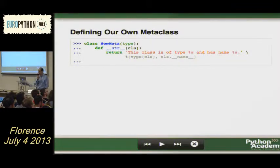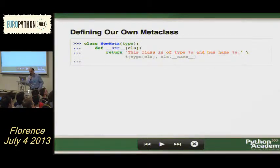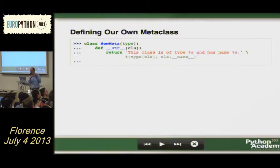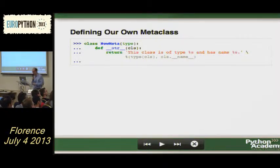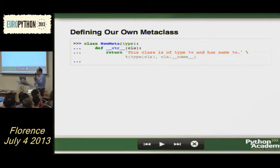We just override one method — the special method __str__, the string representation when you print it out. Instead of self, I get the class as the first argument. Instead of self which is the representation for the instance, you get the class. It sounds a little bit intimidating sometimes, but if you just think of this analogy, it's not that difficult.